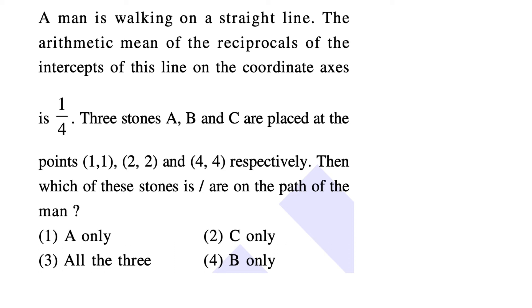So we have a straight line and the given condition is the arithmetic mean of the reciprocals of the intercepts is given to be 1 by 4. All right.